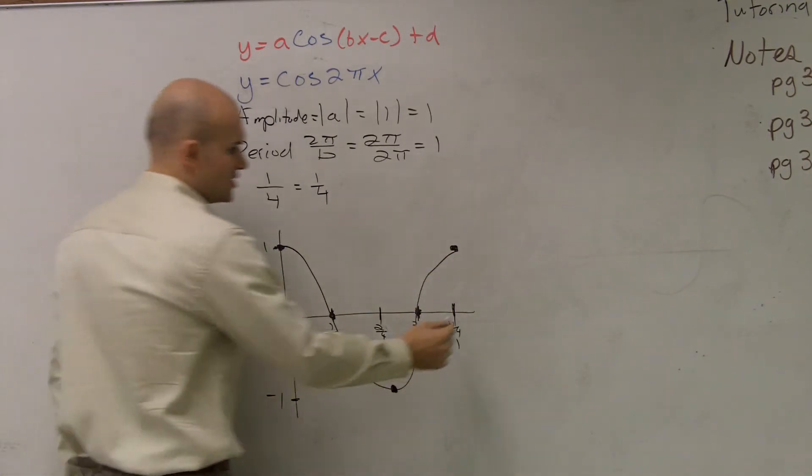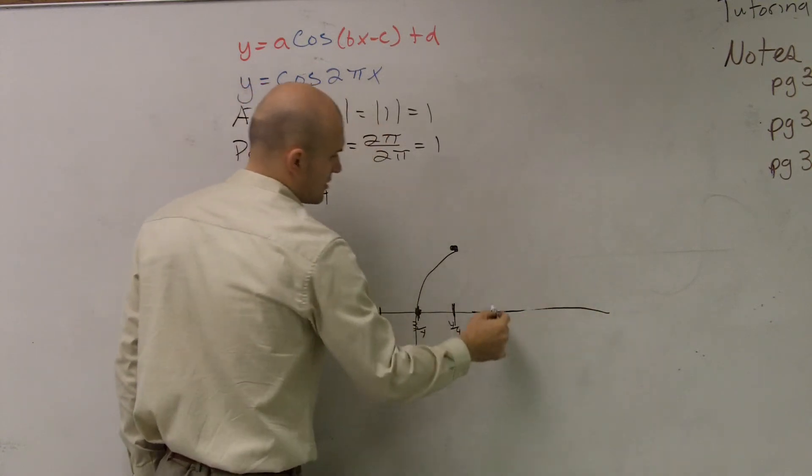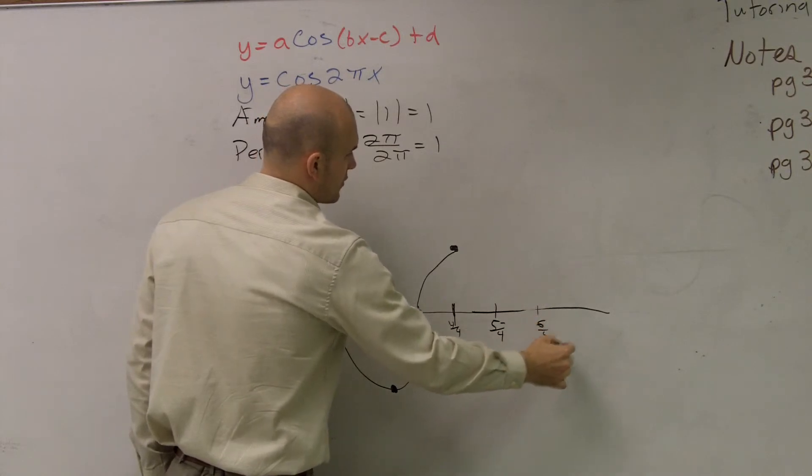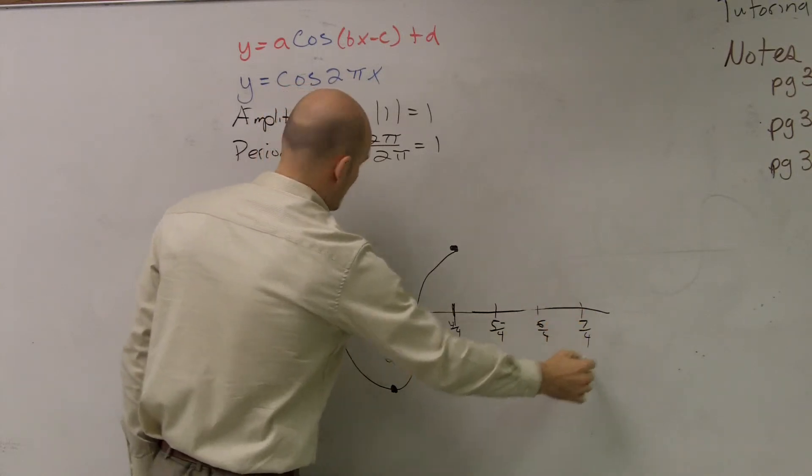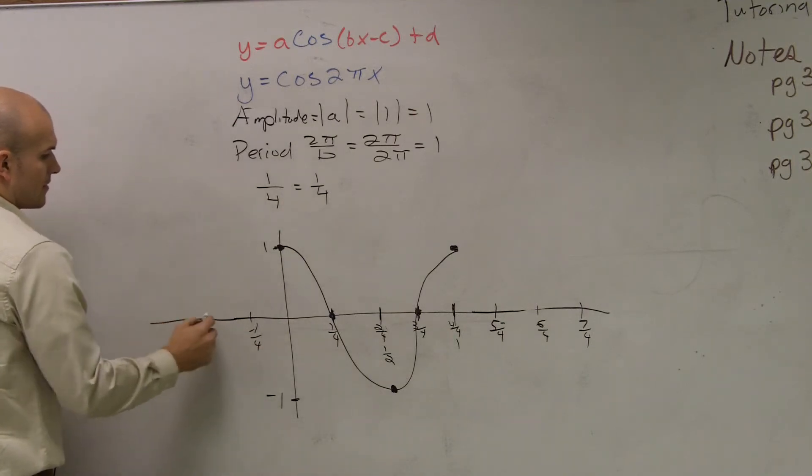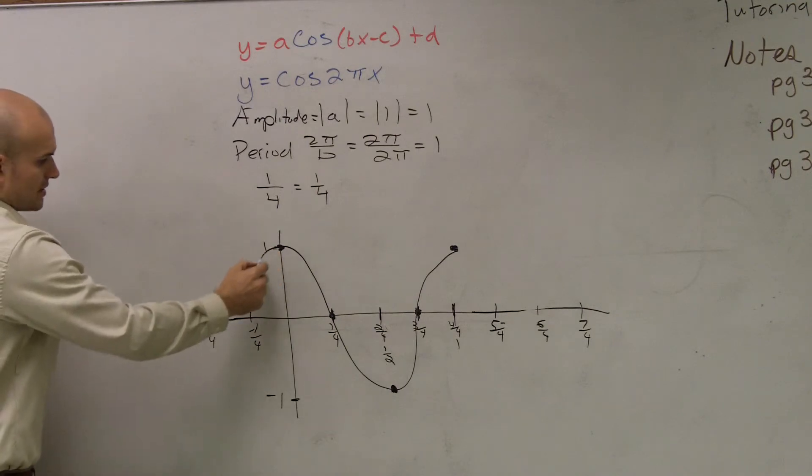Okay? And then, if I just want to continue for more periods, 5 over 4, 6 over 4, 7 over 4, negative 1 fourth, negative 2 over 4. Does everyone follow me? And then you just keep on continuing.